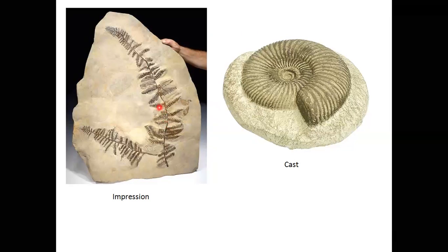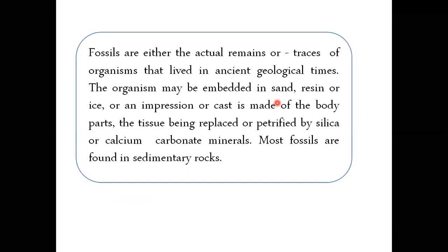For example, leaf impressions on rock are impression fossils, while a snail shell that has itself turned to stone — where the tissue was replaced by calcium carbonate or silica — is called a cast. The tissue is replaced by minerals like silica or calcium carbonate. Most fossils are found within sedimentary rocks, known as layered rocks. The fossil record is thus a strong evidence in favor of evolution.